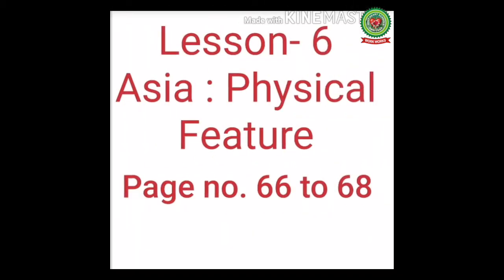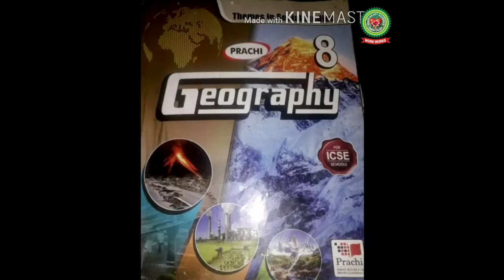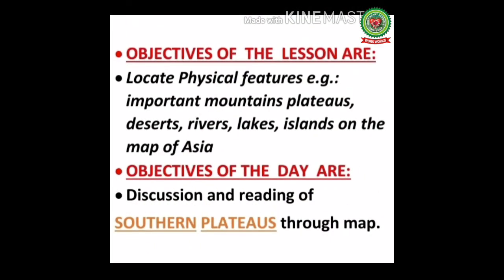This is your lesson number six: Asia Physical Features, given on pages 66 to 68 of your geography book. The objectives of the lesson are to locate physical features — important mountains, plateaus, deserts, rivers, lakes, and islands — on the map of Asia. The objective of the day is discussion and reading of southern plateaus through map.